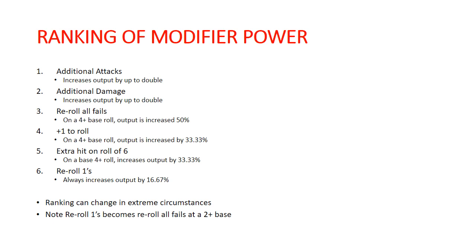I wanted to talk about the ranking of different modifiers. Additional attacks and additional damage basically tie for first. I put additional attacks ahead of additional damage because it produces a lower standard deviation — your spread and variability are less. Additional damage, while just as good on averages, creates a different distribution. Depending on the number of attacks and the amount of damage, that can change which one is better.